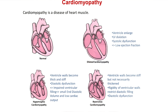Cardiomyopathy involves a disease of the heart muscle. There are several forms: dilated cardiomyopathy, hypertrophic cardiomyopathy, and restrictive cardiomyopathy. In dilated cardiomyopathy, ventricular enlargement happens, causing LV dilation which leads to systolic dysfunction and lowering of the ejection fraction. In hypertrophic cardiomyopathy, the ventricle walls become thick and stiff causing diastolic dysfunction, impaired ventricular filling, small EDVs, and low cardiac output resulting in the phenotypes of HCM.